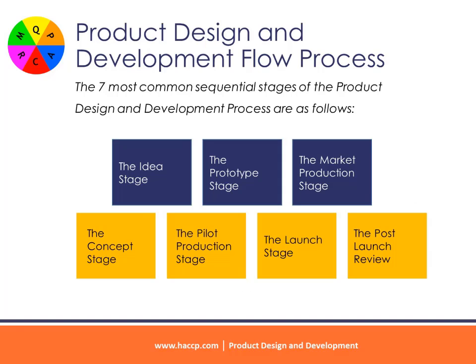Product Design and Development Flow Process. The seven most common sequential stages of the product design and development process are: the idea stage, the concept stage, the prototype stage, the pilot production stage, the market production stage, the launch stage, and the post-launch review.